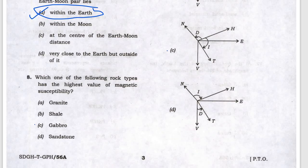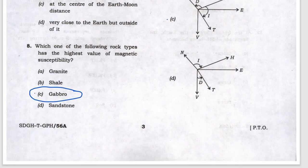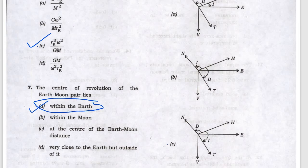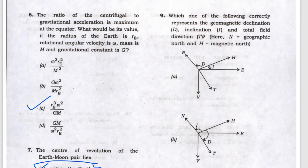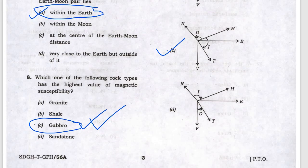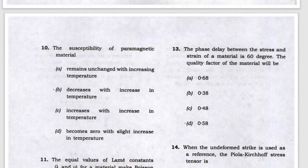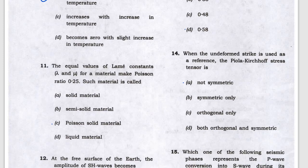Next, which rock has the highest magnetic susceptibility — that is gabbro, which is also an igneous rock and has the highest susceptibility. Next, which of the following is correct — the answer is C. The susceptibility of paramagnetic material decreases with increasing temperature.